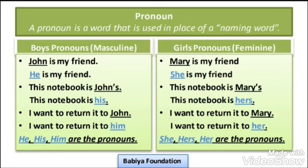John is my friend. In place of John, we write: He is my friend. So the word 'he' is used in place of John. That's why 'he' is a Pronoun — and it is a masculine pronoun. It means 'he' is used for boys.